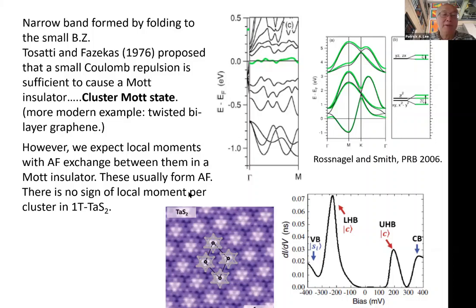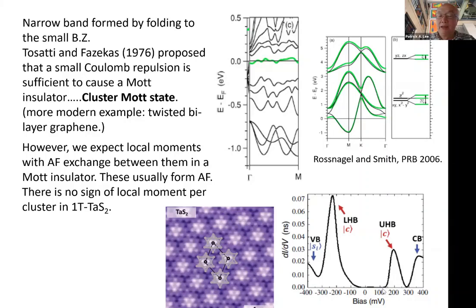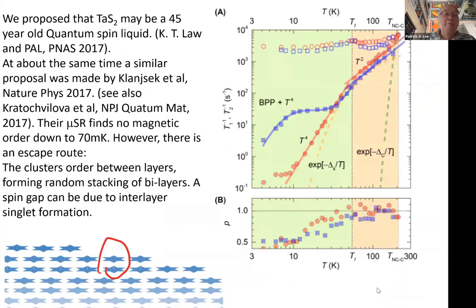These systems are genuinely insulating — tunneling shows a gap, with an upper and lower Hubbard band. The Mott gap is about 100 meV and the bandwidth is also about 100 meV. Several years ago, Vic Law and I proposed this as a good candidate for a quantum spin liquid, calling it a 'Z₂ quantum spin liquid,' since there is no sign of magnetism and muSR finds no magnetic ordering down to 70 millikelvin.